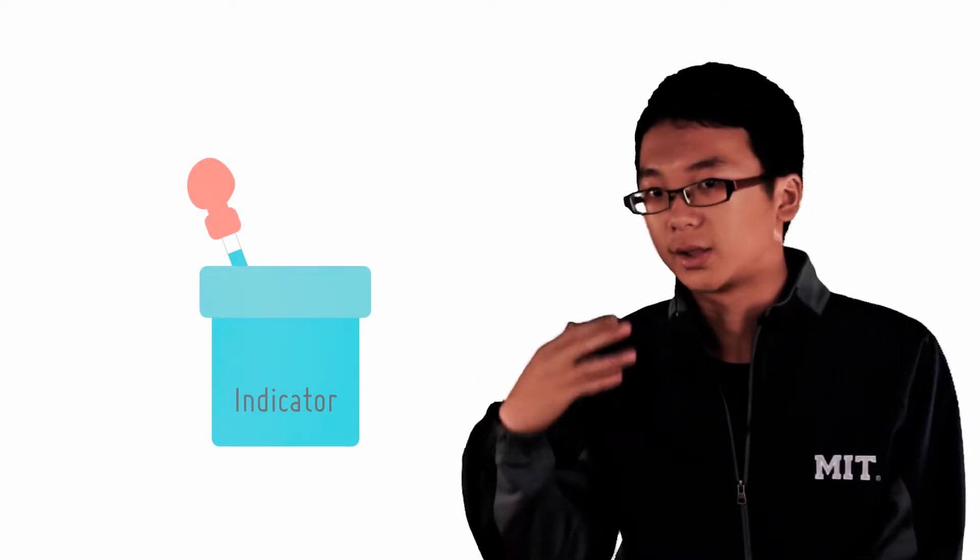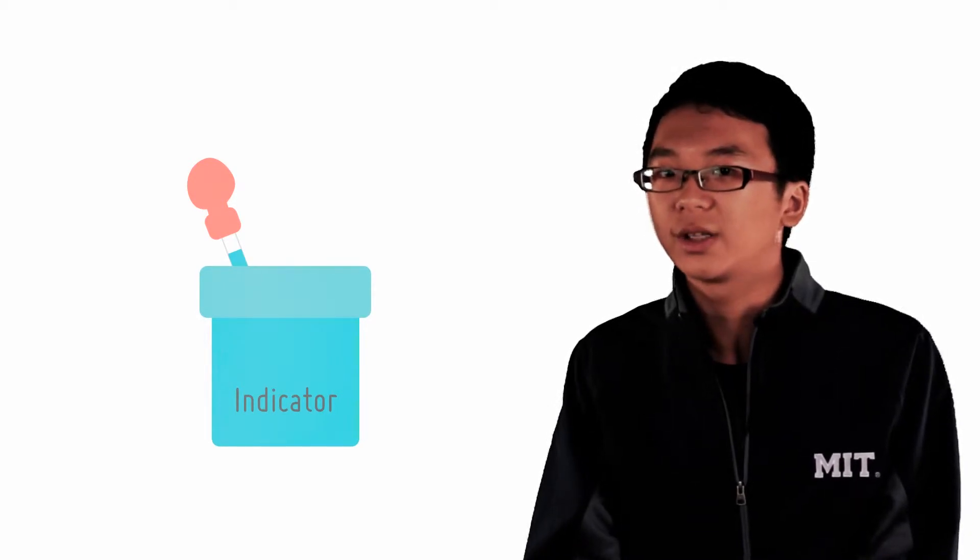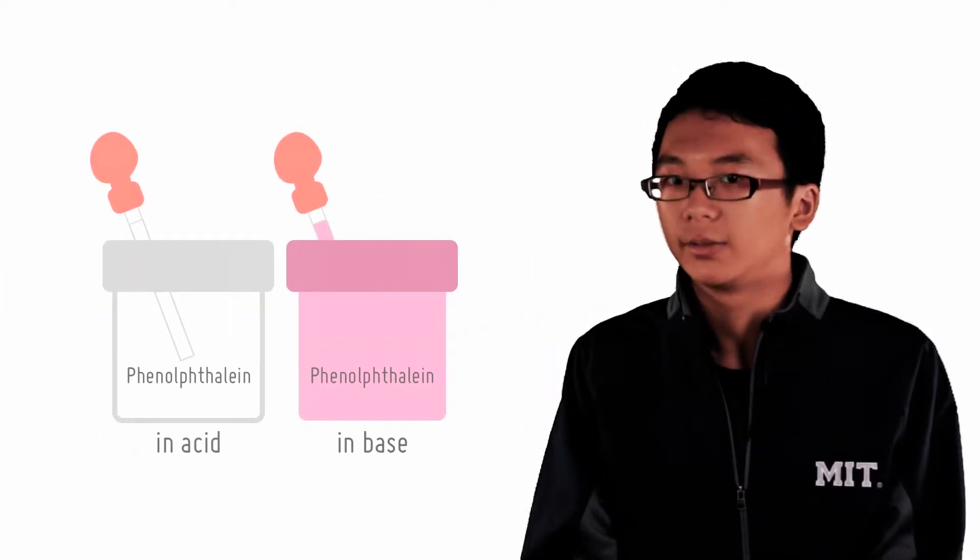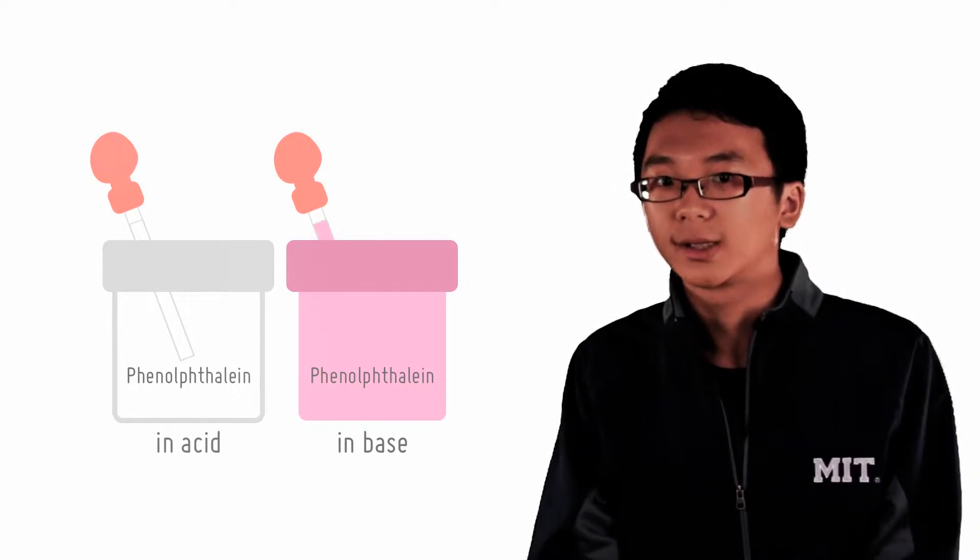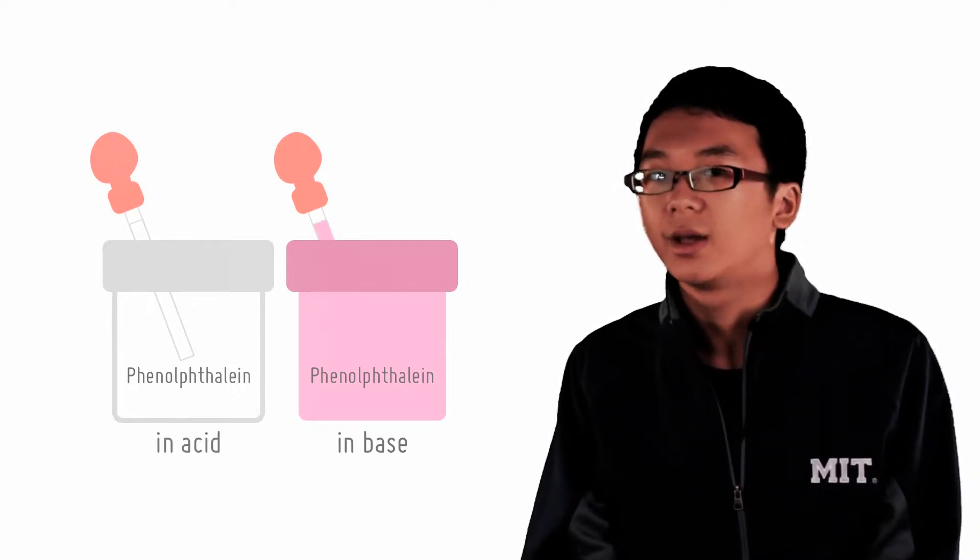How do indicators work? Let's look at one of the favorite indicators of all time, phenolphthalein. It is colorless in acid and violet in base as we know it. Now here is where we understand how it works.